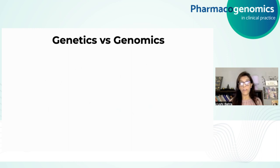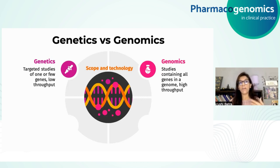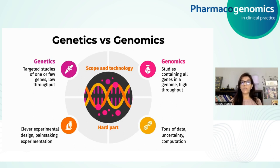Genomics is a relatively newer field of biology. In traditional biology, traditional genetics involved targeted studies of one or few genes, leading to a low throughput of data. Genomic studies, by contrast, involve looking at all the genes or thousands of genes in parallel, giving rise to a high throughput of data. Technology has improved greatly over the past 20 to 30 years, enabling us to look at multiple genes in parallel in less time.